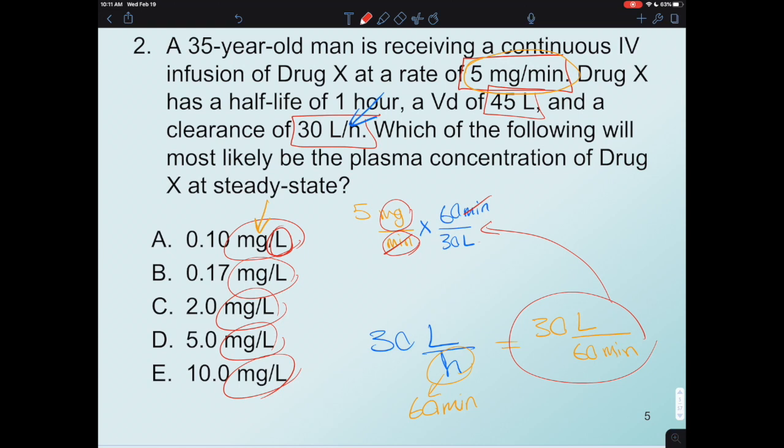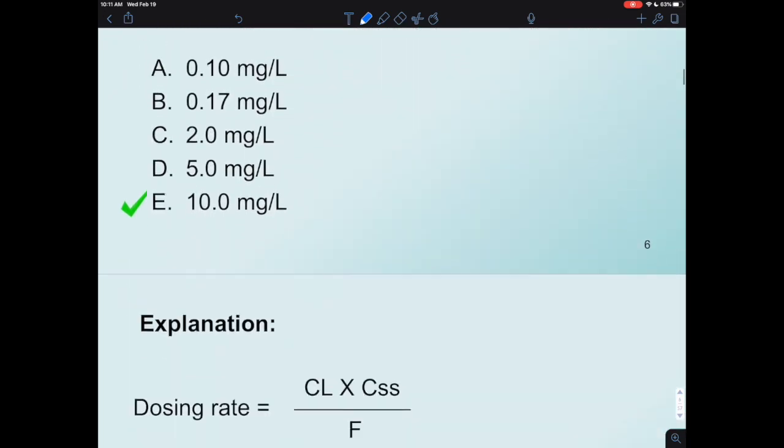So I'm going to write down times - I want 30 liter in the bottom, 60 minutes on the top. You see where I'm going. So now I can cancel the minutes and I'm left with milligrams per liter. The unit is milligrams per liter and the numbers are: 30 divided by 60 is just 2, so 5 times 2 is 10. So it's 10 milligrams per liter, answer E.